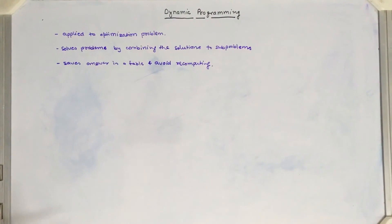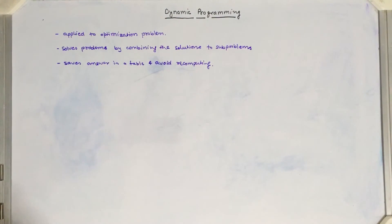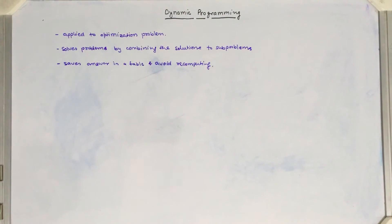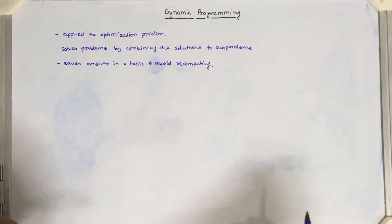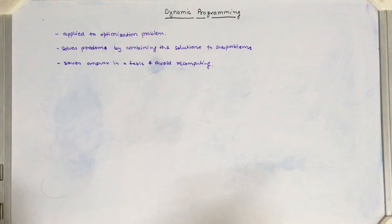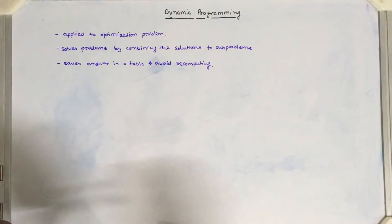In this video we will learn about a design technique in algorithms known as dynamic programming. Dynamic programming is generally applied to optimization problems — problems with a defined objective, whether to minimize or maximize some value. For example, given a network of different routes, we want to find the maximum or minimum cost required to go from source to destination. Whenever we have a defined objective in a problem, we call it an optimization problem.